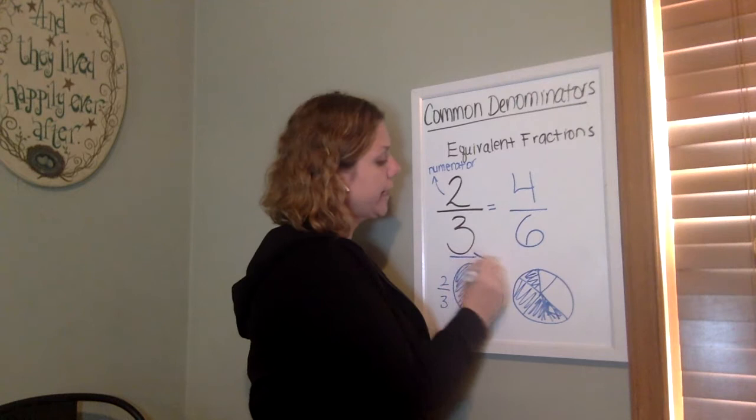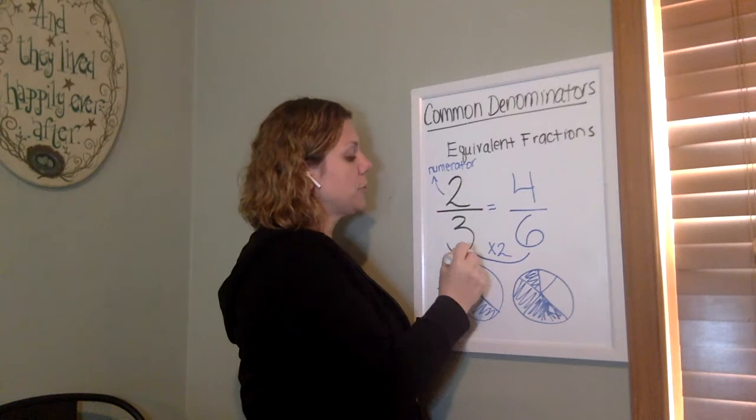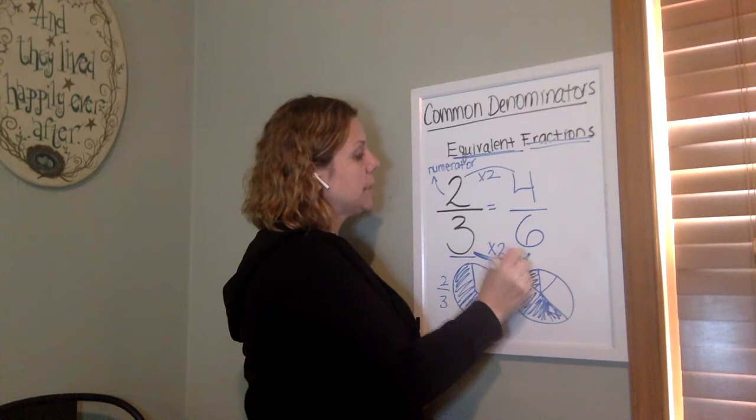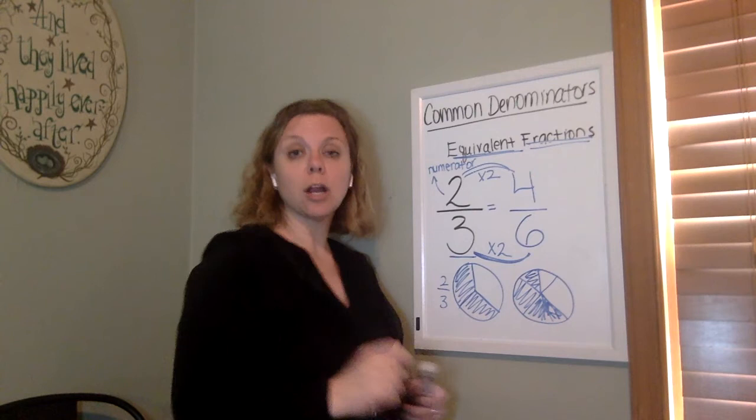You'll also notice that to get from three to six I multiply by two and I can also whatever I do to the bottom has to match on the top. If it is truly an equivalent fraction and equal, equivalent means equal, then that's going to mean that what happens on the bottom is the same thing that happens on the top. That's going to mean that those two fractions are equivalent.